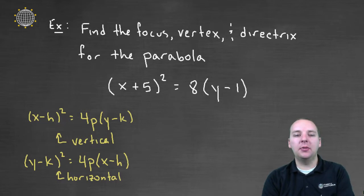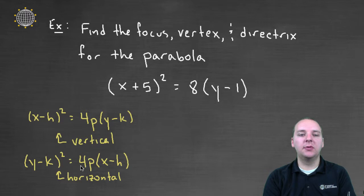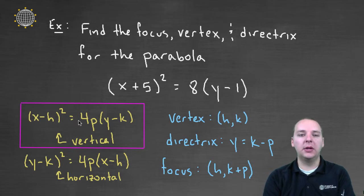And the second one is (y - k)² = 4p(x - h). Now looking at our formula, I think it's pretty clear that ours is the first one, because the x is squared and not the y. So it's pretty clear that ours is this first formula here.